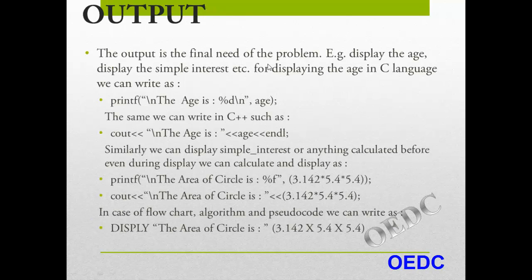That is in the output module. The output is the final result of the program. For example, display the age, display the simple interest, or display the area of the circle. We should understand what is the output — for displaying, display the grade chart, or display the mark sheet. In C language and C++ we can write: cout << age using the extraction symbol. Similarly we can display interest or anything calculated before.